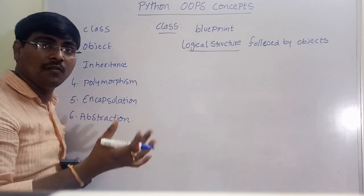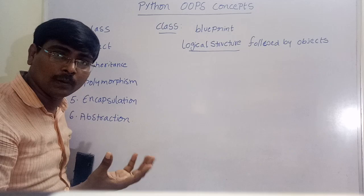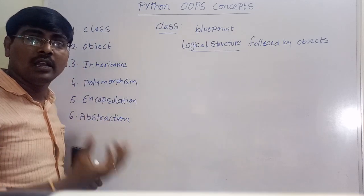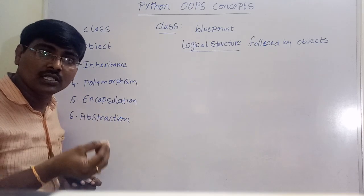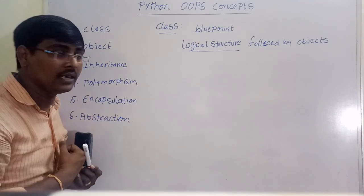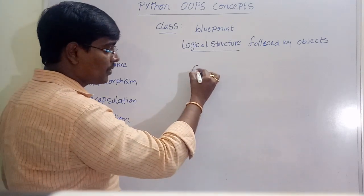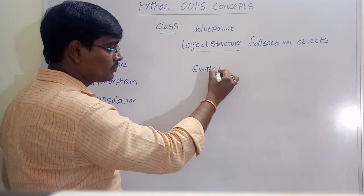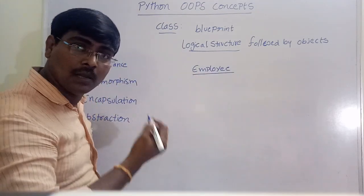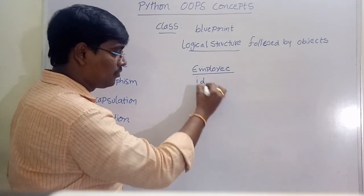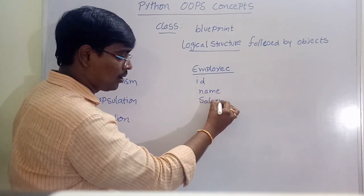Generally a class defines the real world scenario. Each class contains attributes and functions. For example, an Employee class contains some attributes: the ID of the employee, name of the employee, and salary of the employee.